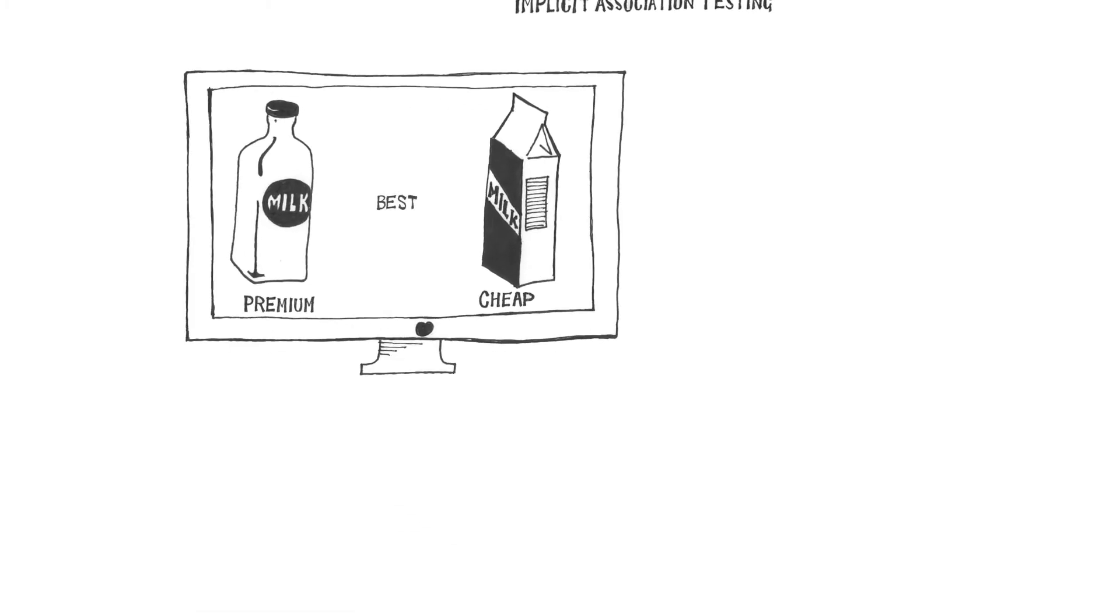Next, a series of words and images appear as stimuli at the bottom of the screen. Participants press one button if a stimulus belongs with the group on the left, and a different one if it belongs with the group on the right.